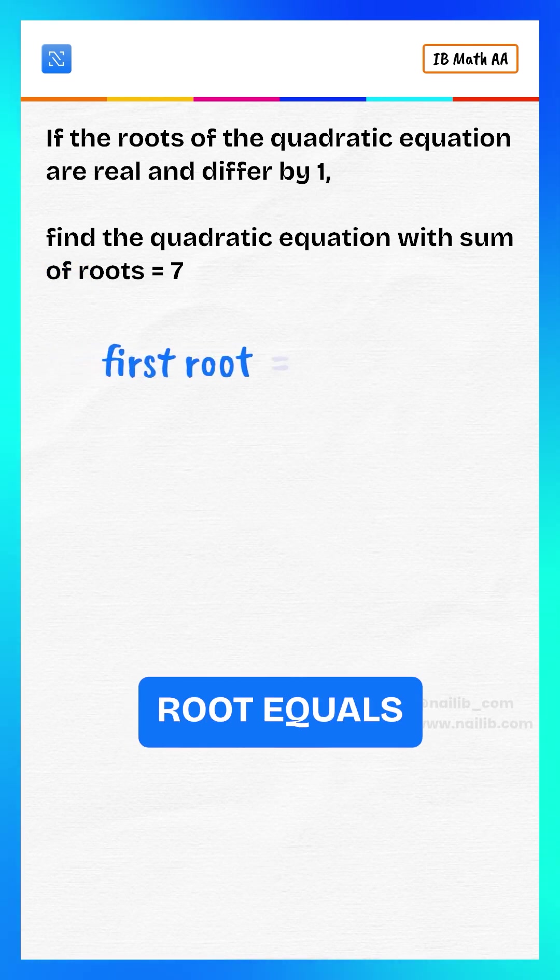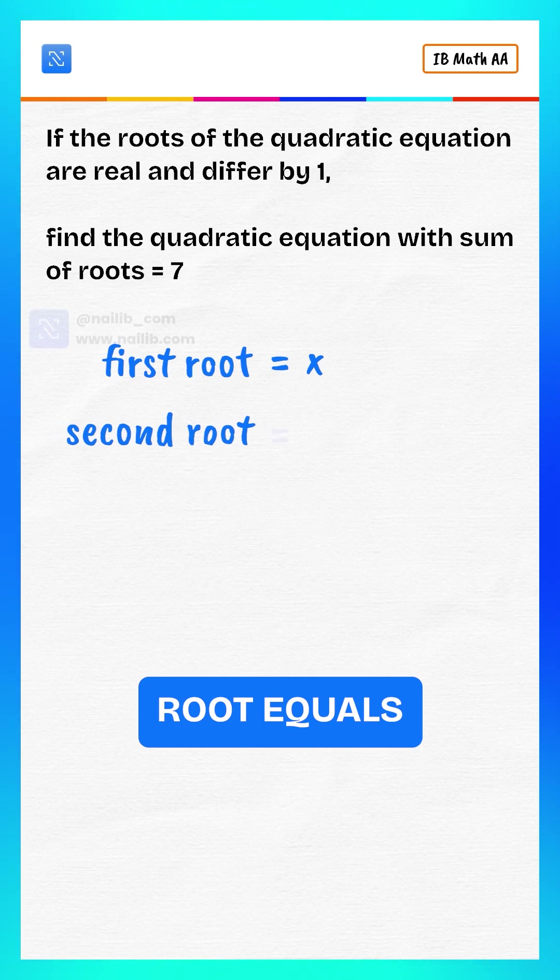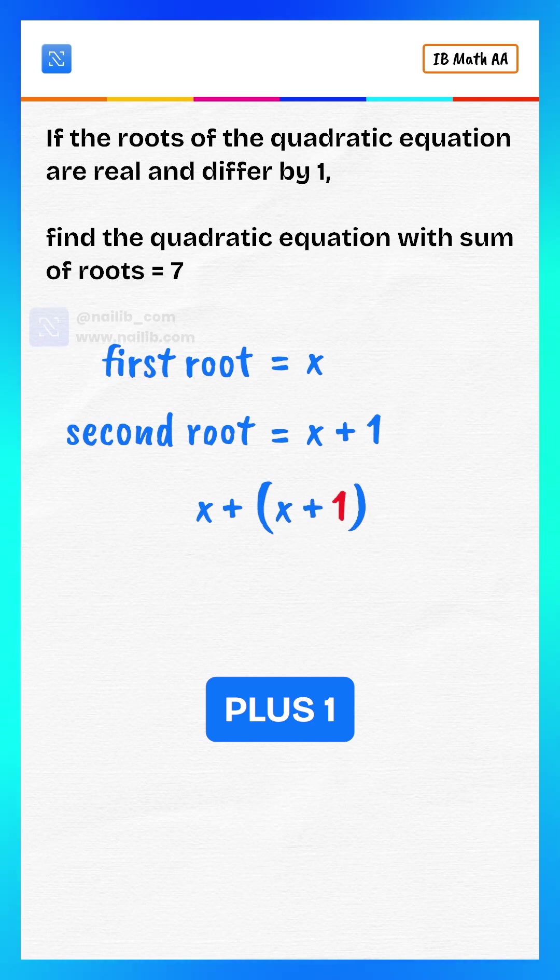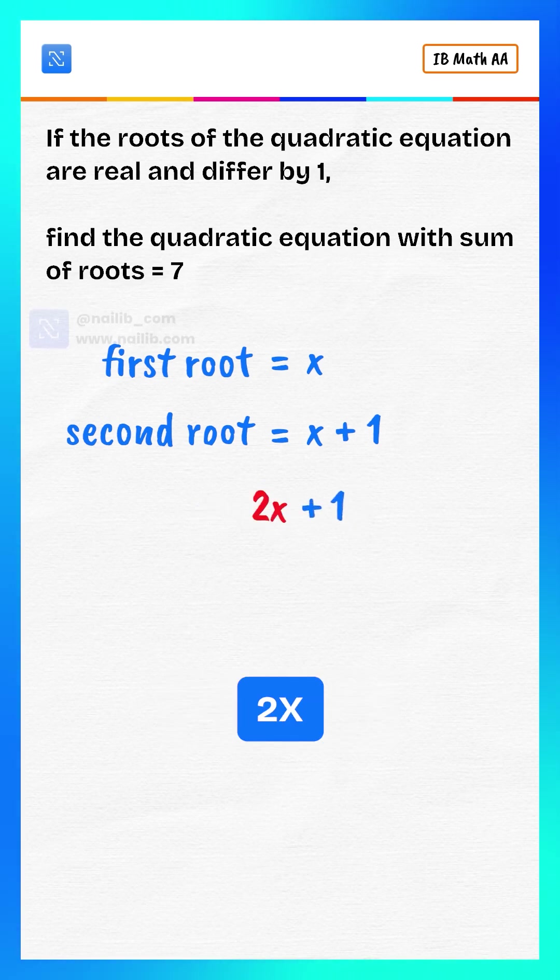Let the roots be: first root equals x, second root equals x plus 1. So the sum of roots becomes x plus x plus 1, which equals 2x plus 1.